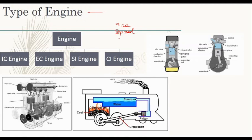Then, type of combustion and type of fuel used. That's why we can use an internal combustion engine or external combustion engine. Size and speed are important, but fuel and combustion type is very important.